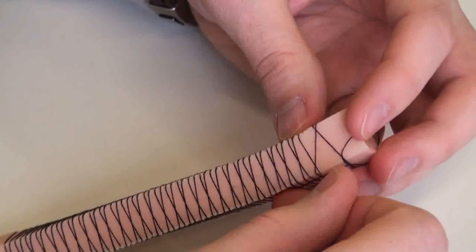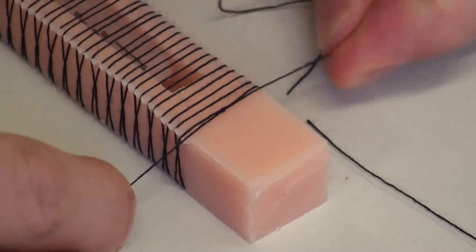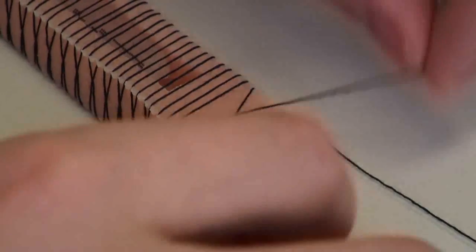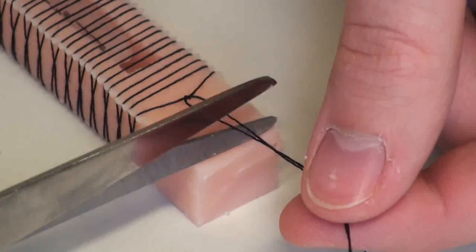When you again reach the other side of the actuator, you can stop winding and make a knot with the beginning of the thread. After that, cut off the surplus.